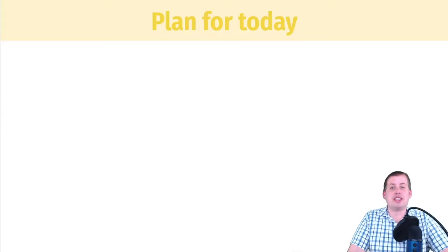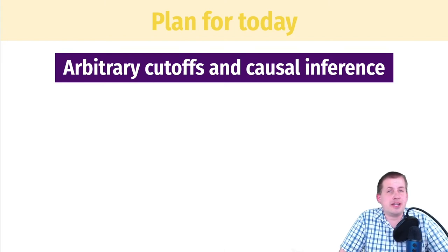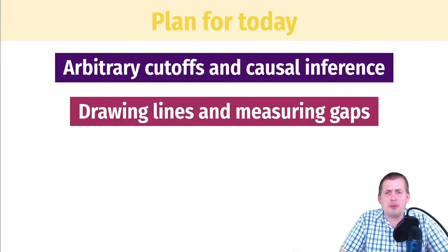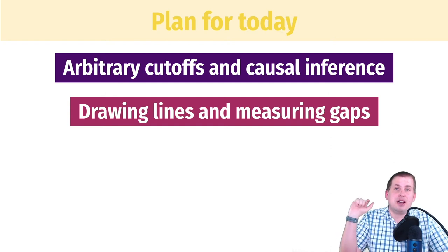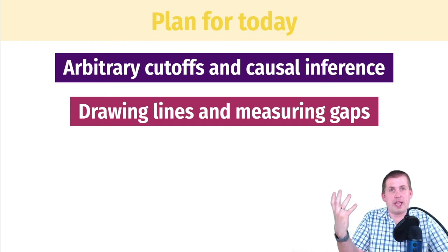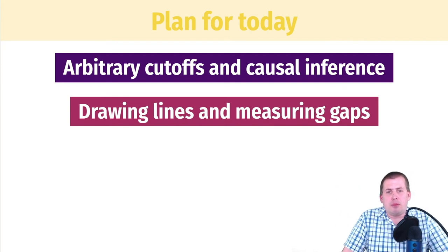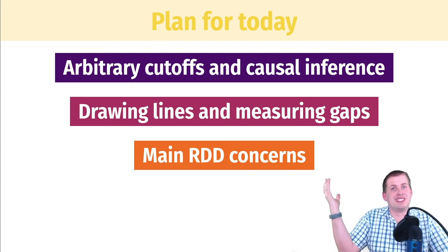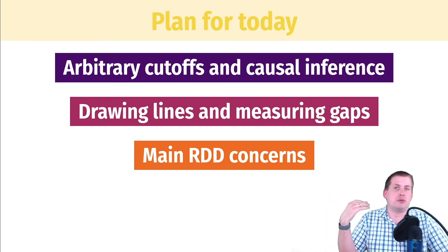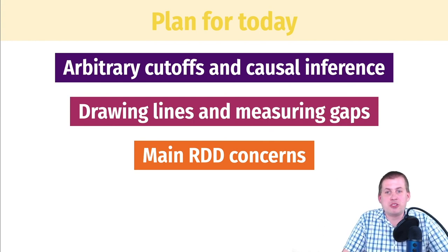In the slides, what we're going to be covering today is this idea of arbitrary cutoffs and how that helps us with causal inference and quasi experiments. Then we'll talk about drawing lines — throughout the semester we've been talking about y equals mx plus b, or formulas like y equals beta-0 plus beta-1 x1. We're going back to the math behind these lines because it's crucial for regression discontinuity. The whole way we find causal effects is by drawing lines and then finding gaps where the lines cross a certain threshold. After that we'll talk about some of the main concerns behind regression discontinuity. You'll often see RDD, standing for regression discontinuity design, or just RD — they're both the same thing.